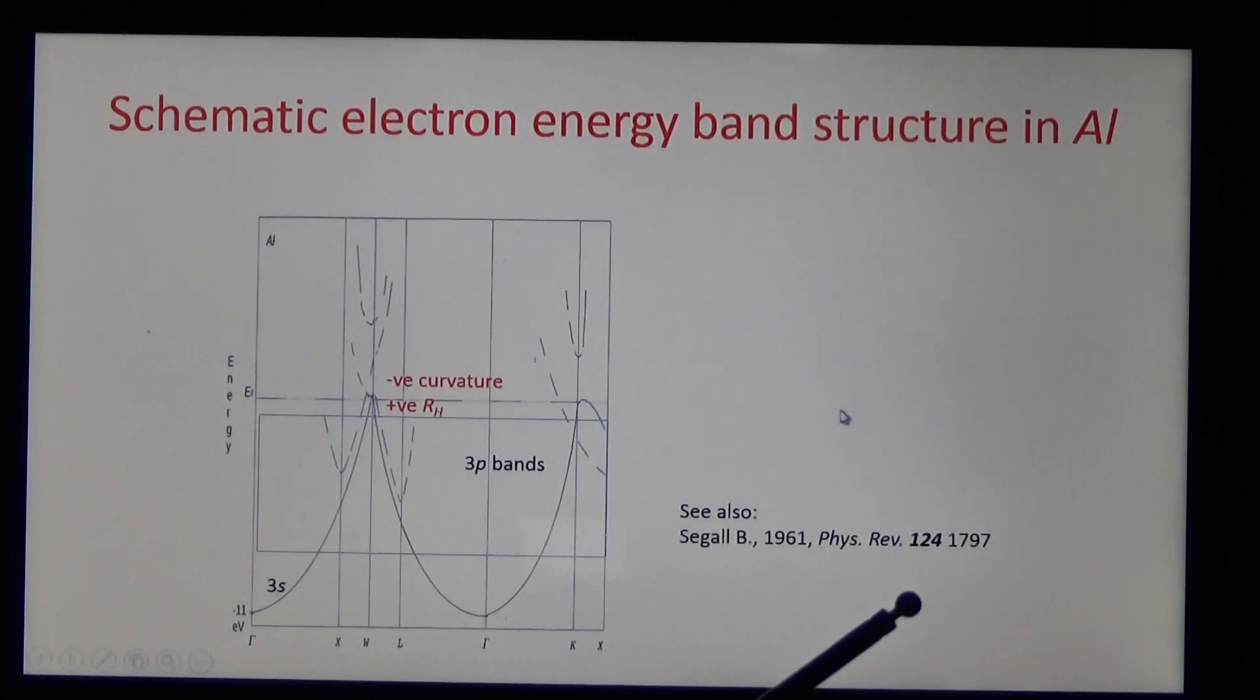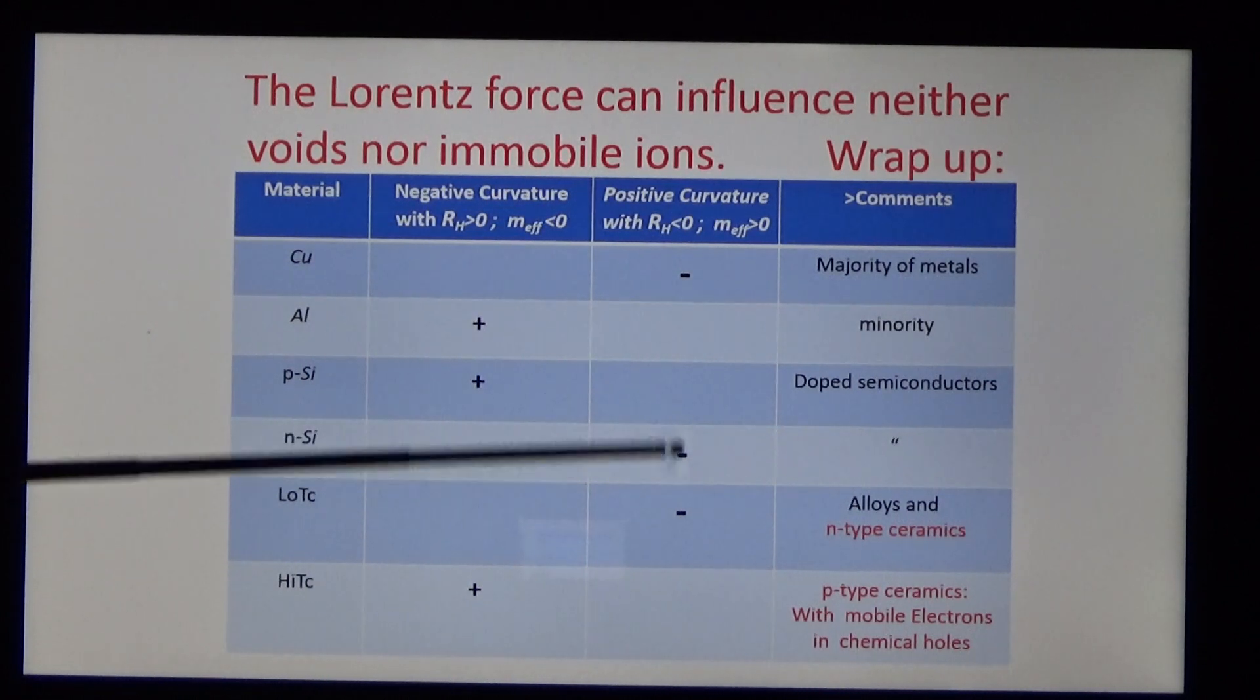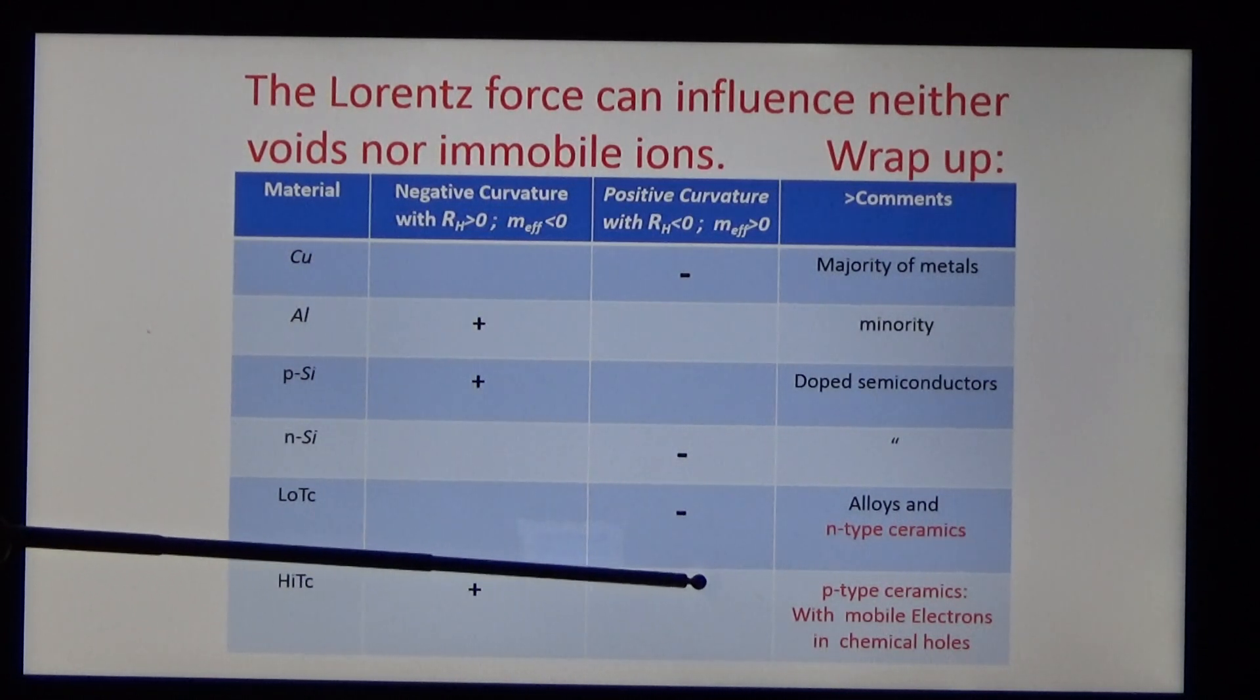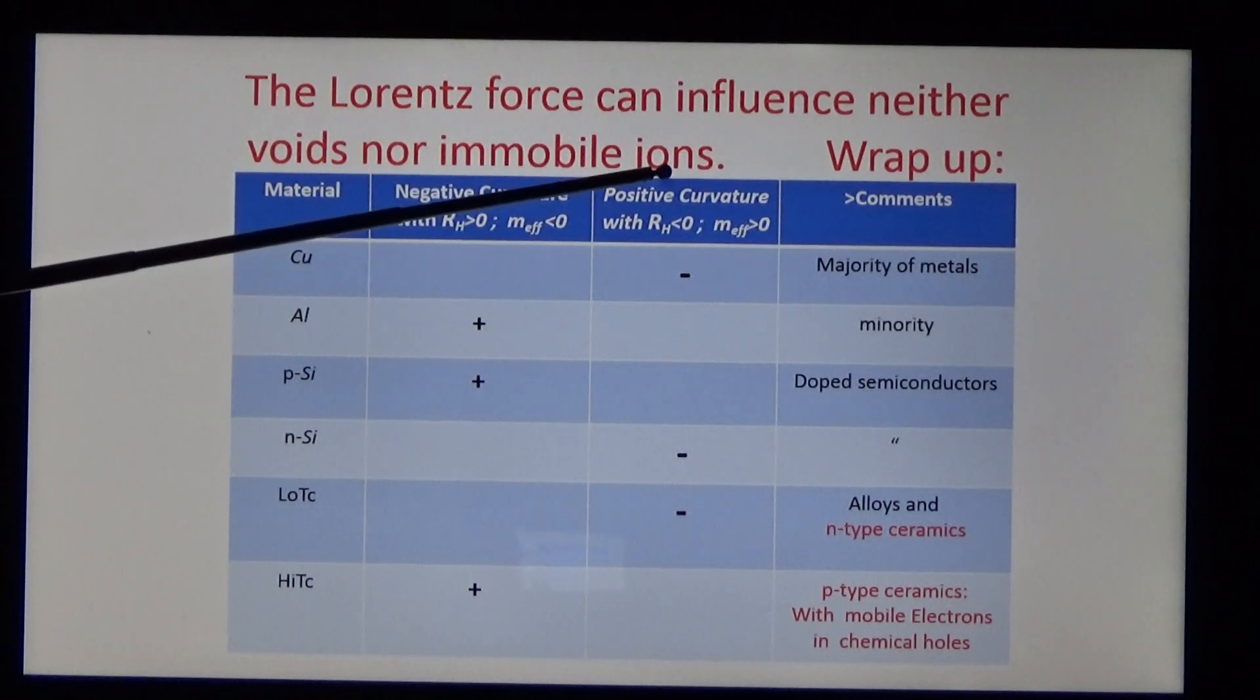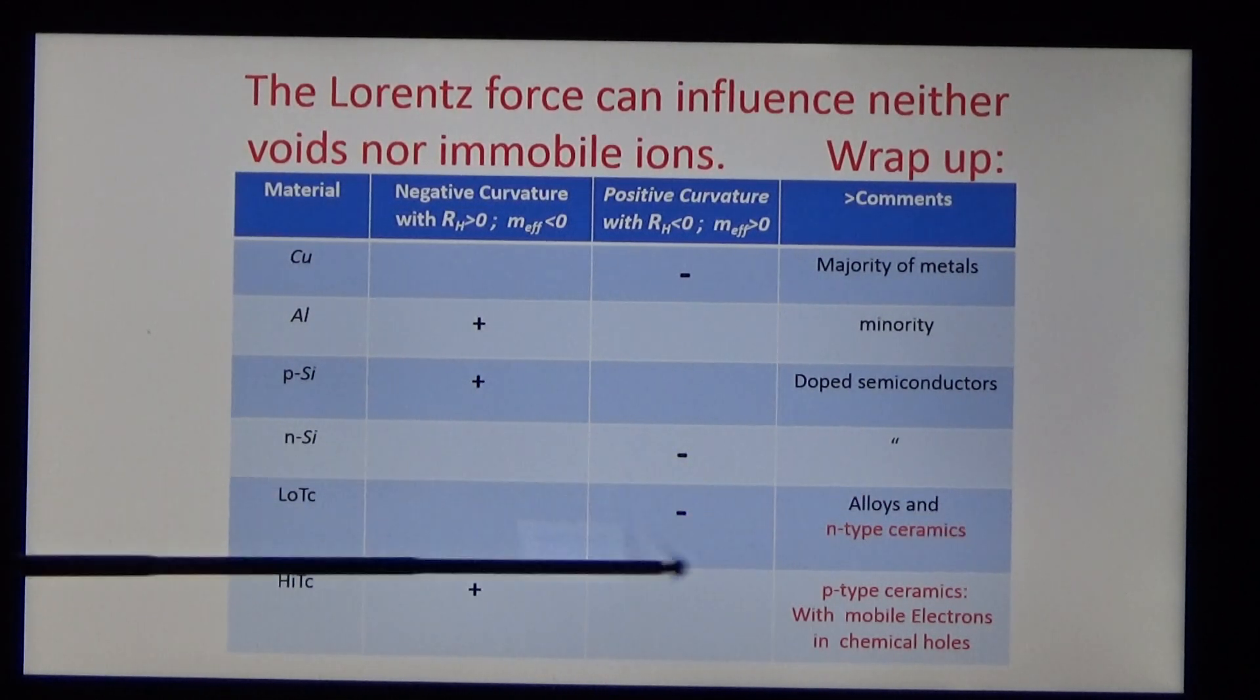So we can sum up these iconic models. Aluminum, p-type silicon, high TC materials have positive Hall coefficients and negative curvature. Copper, n-type silicon, low TC compounds have negative Hall coefficients and positive curvature. In confirmation, n-type ceramics are low TC.